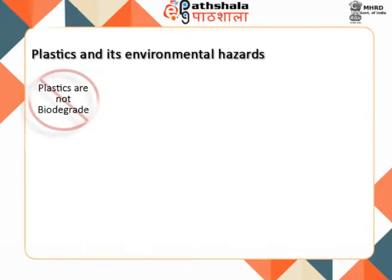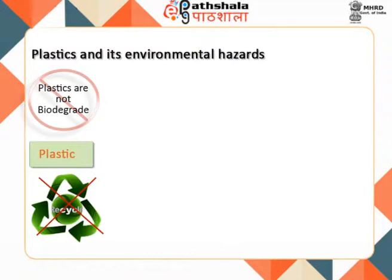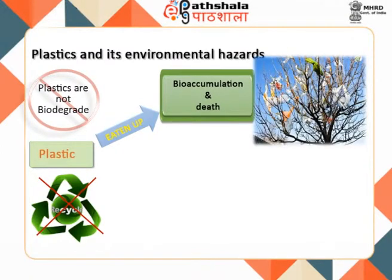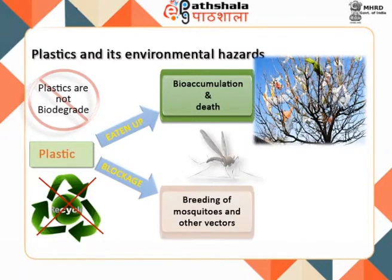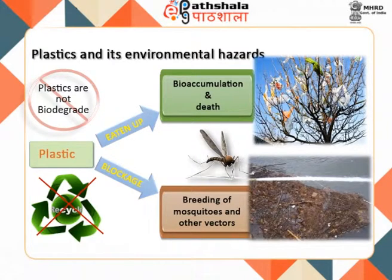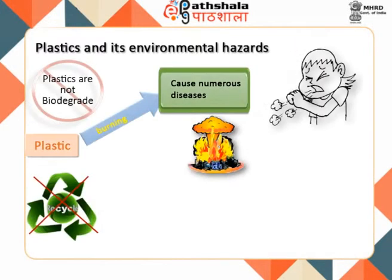Plastic is hazardous to the environment because it does not get biodegraded. Approximately 70,000 tons of plastic are dumped in the oceans and seas globally. These are eaten by terrestrial as well as aquatic animals, leading to the bioaccumulation of plastic inside their bodies, which can cause choking and ultimately lead to their death. Blockage due to plastic accumulation may form shelters for the breeding of mosquitoes and other harmful vector insects, which may cause numerous diseases in humans. Burning plastic leads to contamination of the atmosphere due to the release of poisonous chemicals, leading to air pollution.